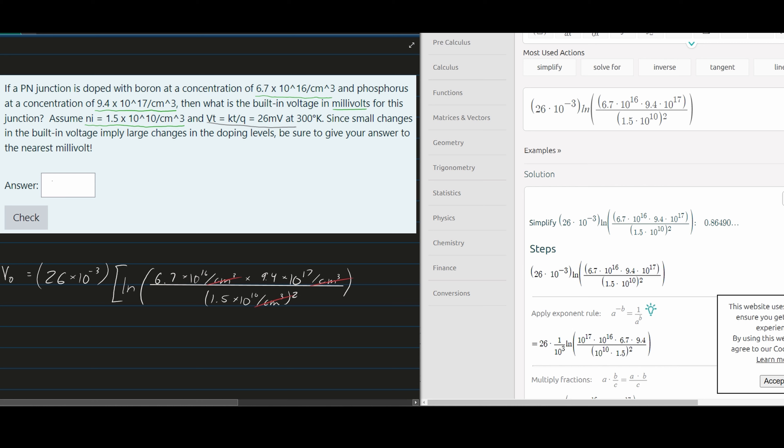Converting to millivolts, the answer is 864.90 mV. This is the built-in voltage for the P-N junction.